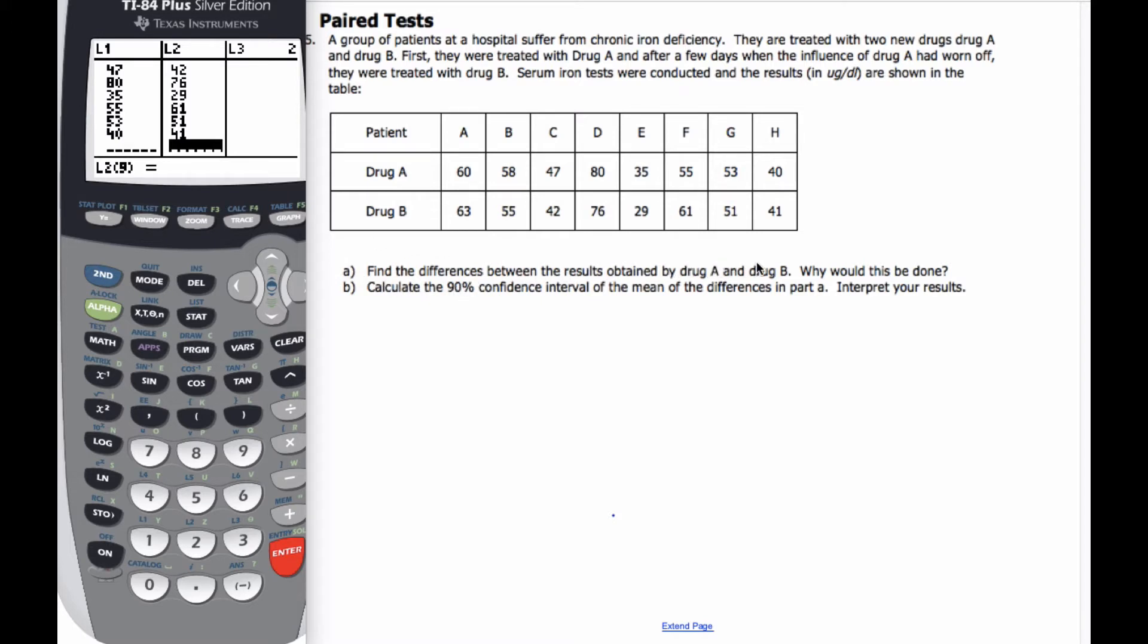Part A says, find the differences between the results obtained from drug A and B. Okay, so if I'm going to do the differences, I've already added in list one, I put drug A, in list two, I put drug B.